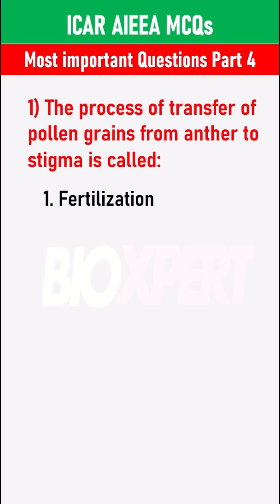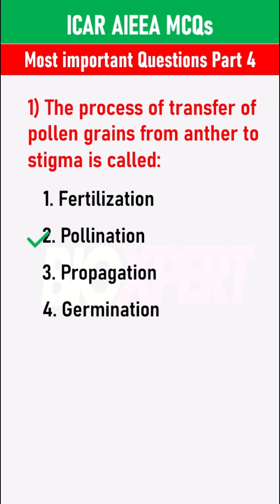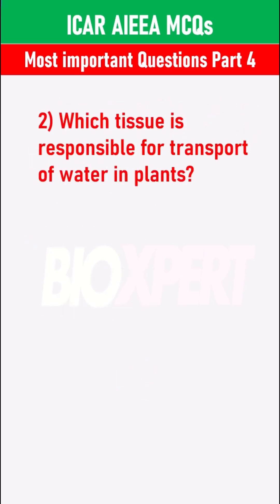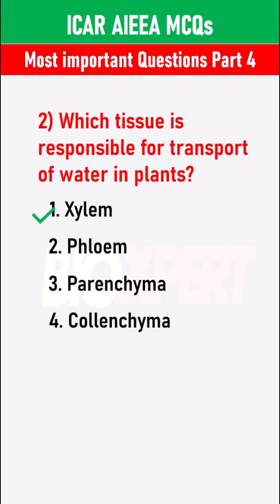The process of transfer of pollen grains from anther to stigma is called pollination. Which tissue is responsible for transport of water in plants? Xylem.